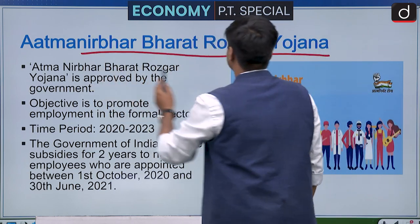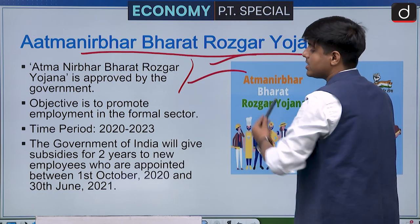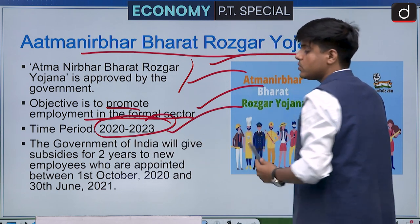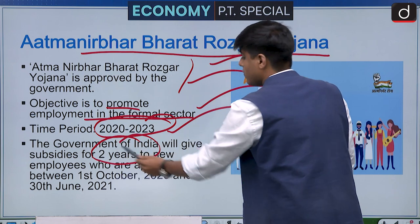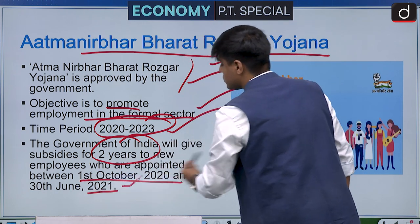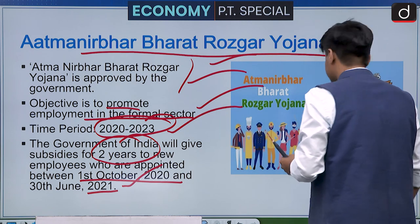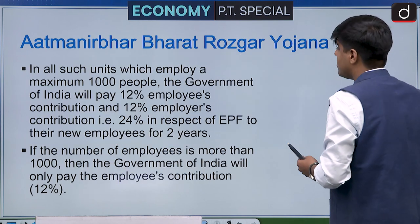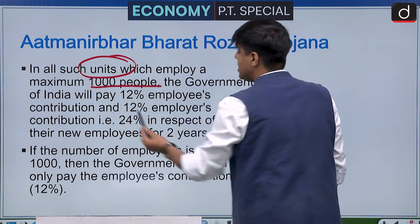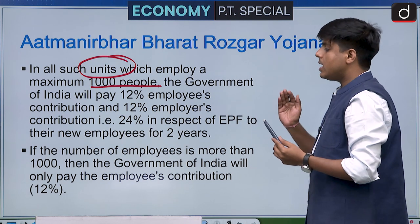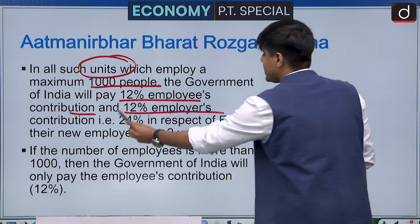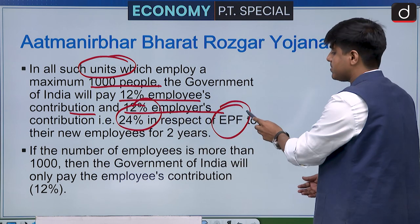Atmanirbhar Bharat Rozgar Yojana was in news as it was approved by the Government of India to promote employment in the formal sector. The scheme runs from 2020 to 2023. The government will provide a subsidy for two years to employees who join the formal workforce between 1st October 2020 and 30th June 2021. For units employing up to 1,000 people, the government pays both the 12 percent employee and 12 percent employer contribution — totaling 24 percent — to the EPF for new employees for two years.